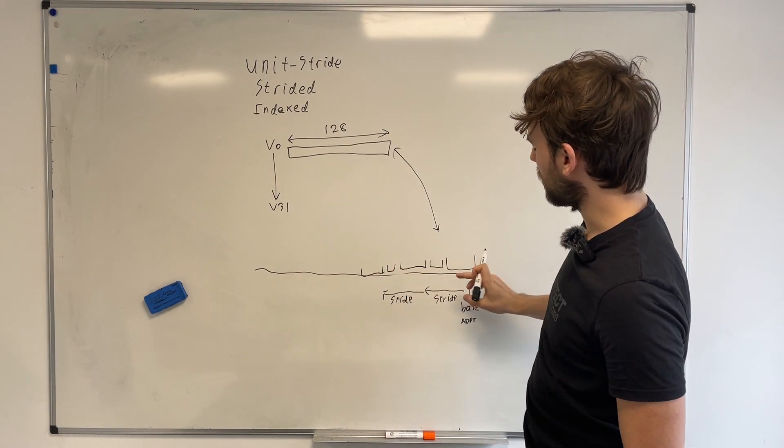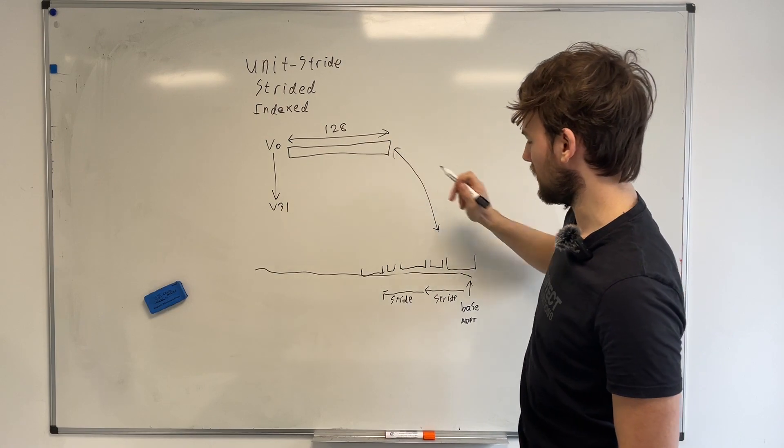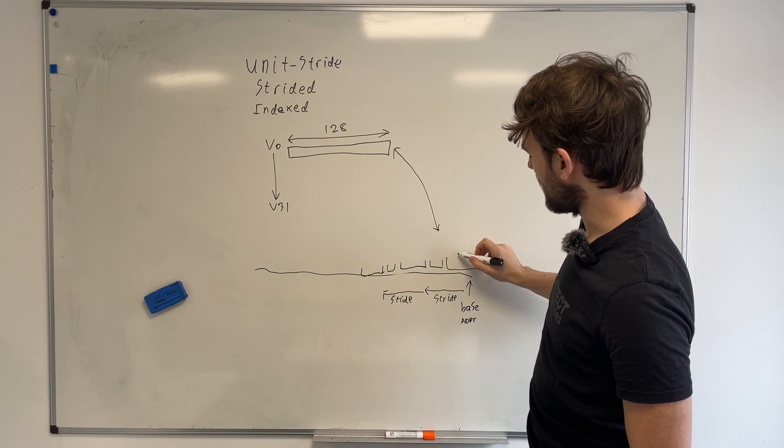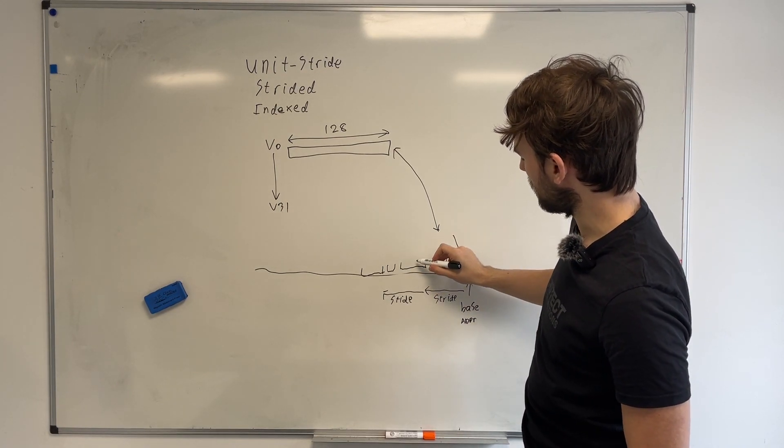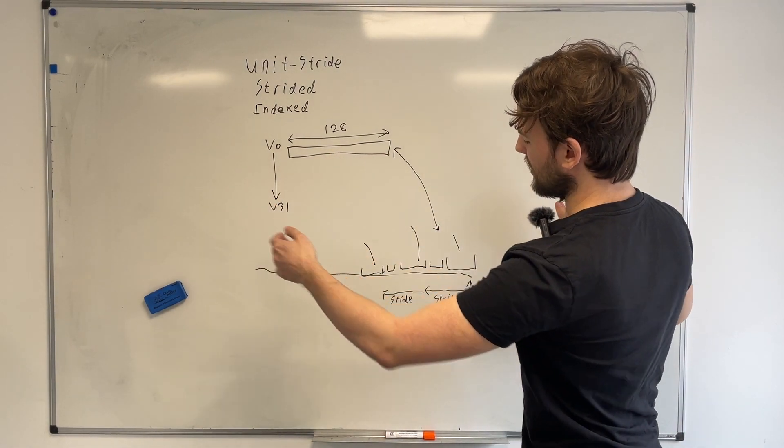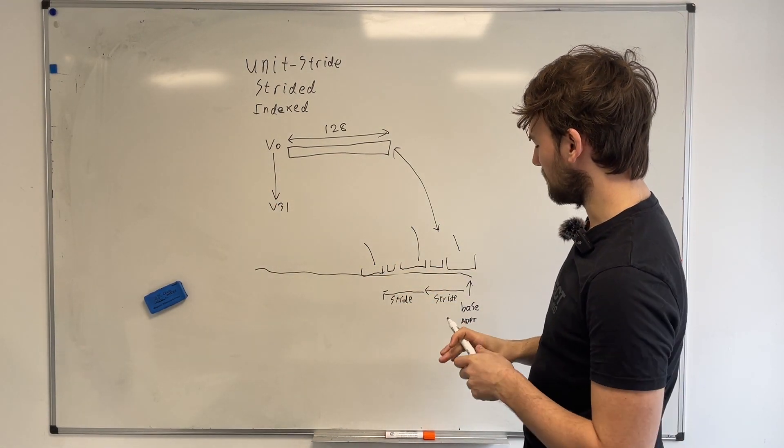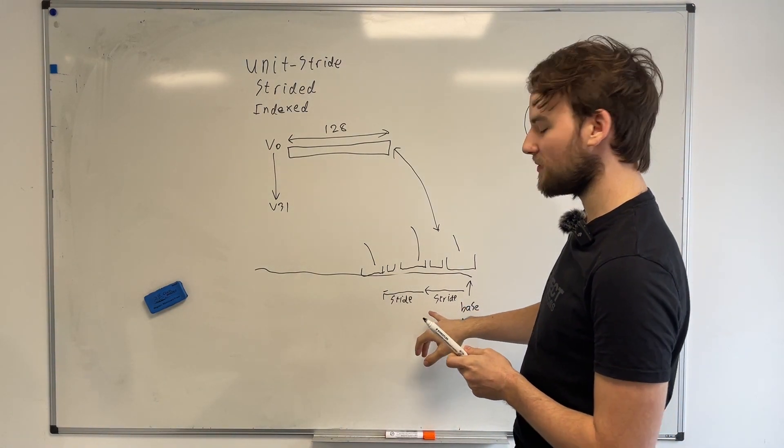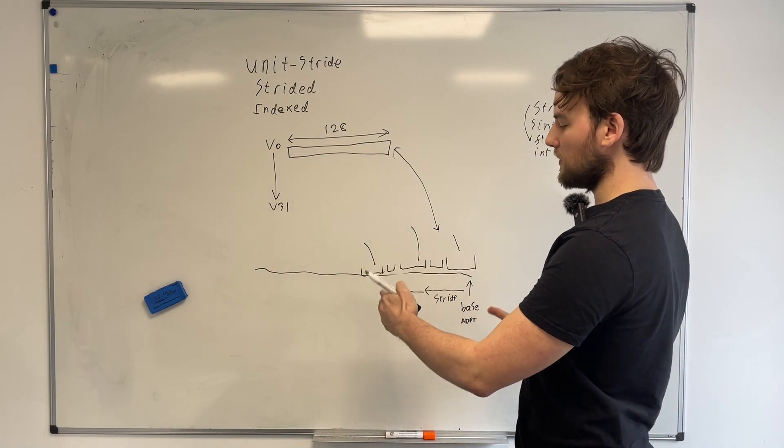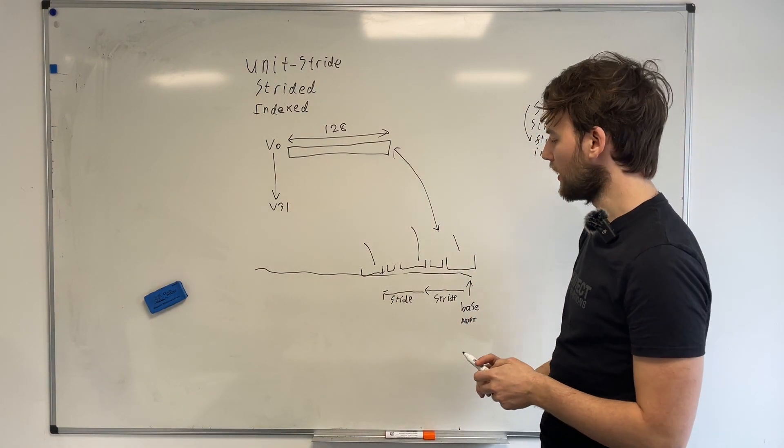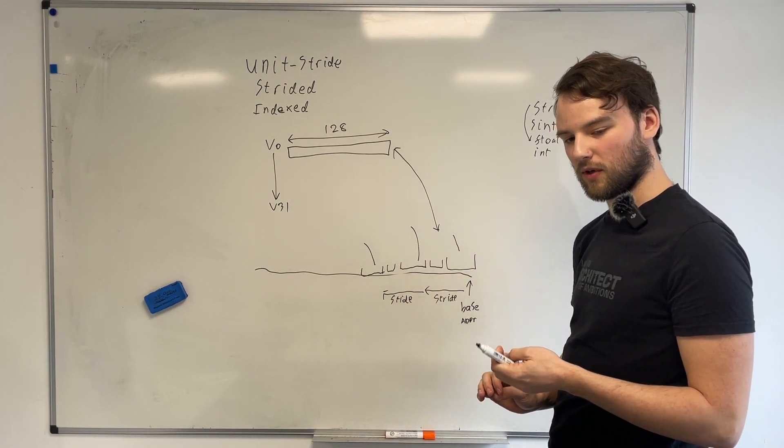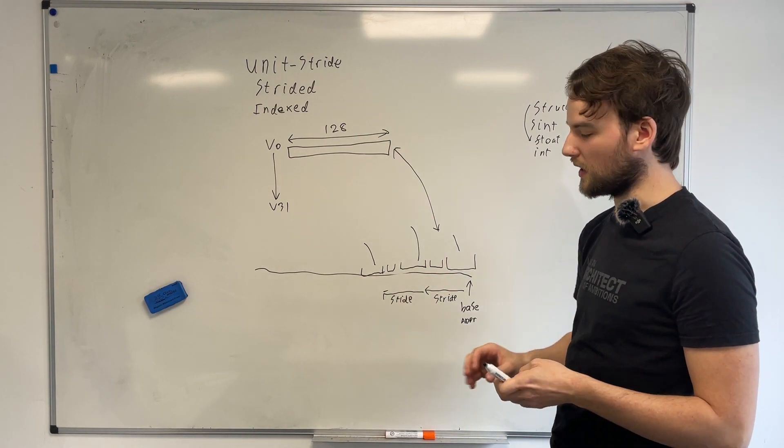And each of these elements which are loaded get packed into the vector register without any gaps. So these elements would all get concatenated together, back to back to back in your vector register. This stride value is also signed as well, so you can do interesting things such as have a negative stride and essentially reverse the byte order of something. Or you can even have a stride of zero if you want to, say, write to a peripheral or something and write the same address multiple times.